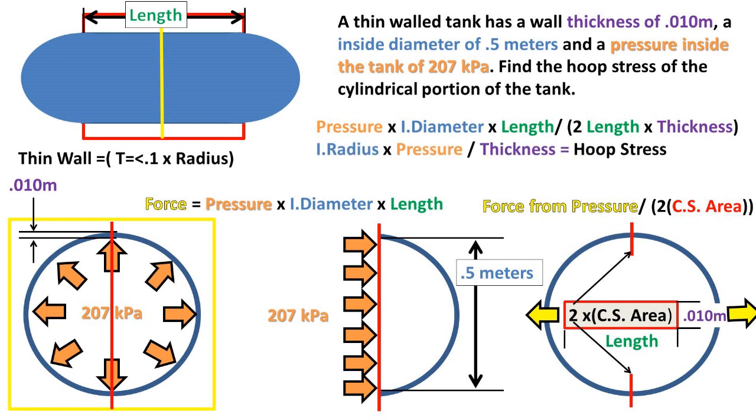Now we notice that we are really just dividing length by length, so it cancels out. We also notice that we are dividing by two, so the diameter can be changed to radius being that radius is half of the diameter.